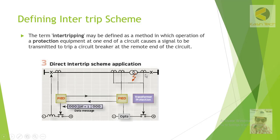There is no breaker on the transformer high voltage side, but there is a breaker on the transformer low voltage side. So if there is a fault on the line or on the transformer, in order to isolate it, since there is no local breaker, the trip signal has to be sent to the remote breaker and it should trip immediately.